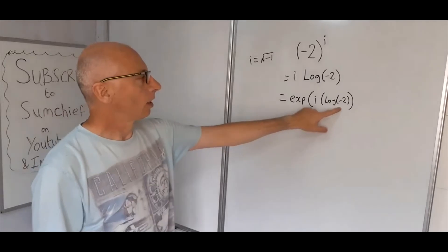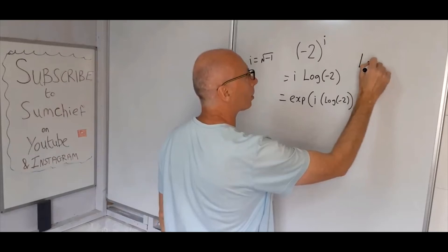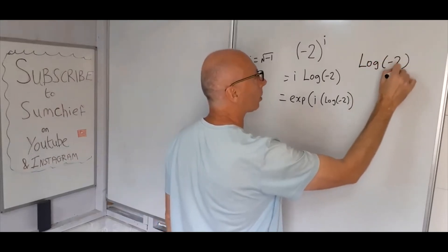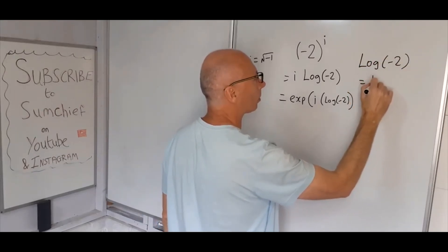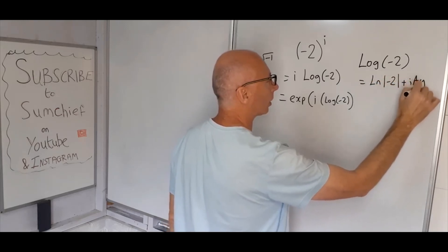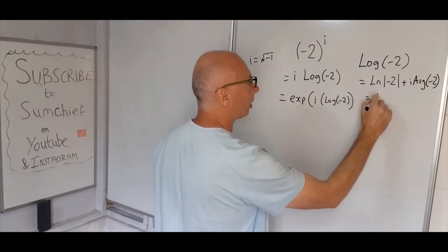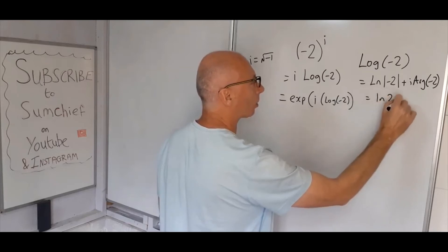Okay, log of minus two. Now we can work this one out, that's pretty straightforward. So the principal log of minus two, that basically equals natural log of minus two plus i. This one breaks down to log of two plus i.